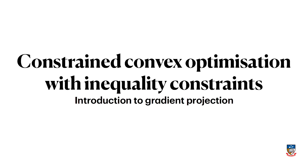We saw in the last example that even with two constraints, we've got four things to check. With three constraints, we'd have eight conditions to check. We have this explosion in the number of combinations of constraints that we have to check every time we add a new constraint. By the time we're up to a thousand constraints, we've got 2 to the power of 1000 things that we need to check — that many different solutions of the KKT equations — and the whole thing blows up.